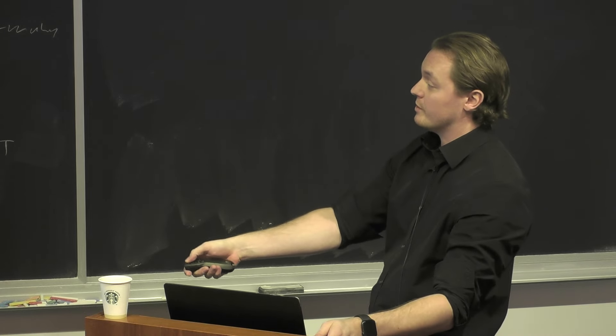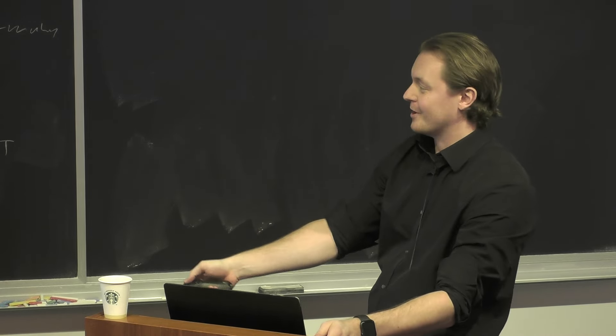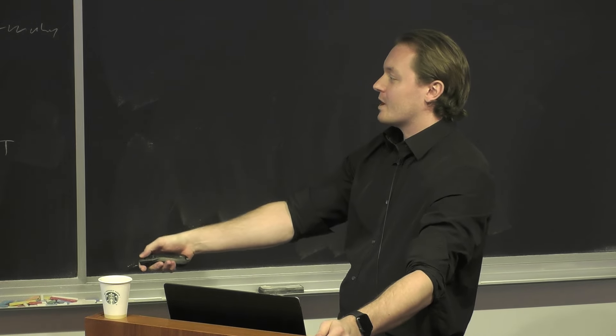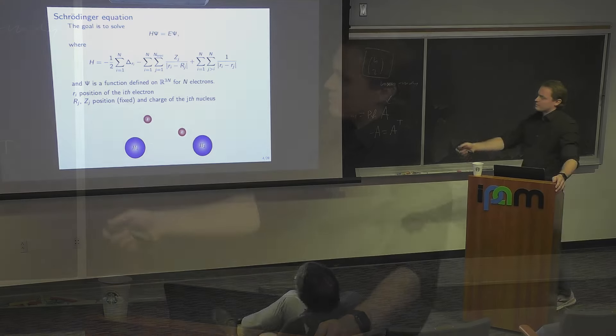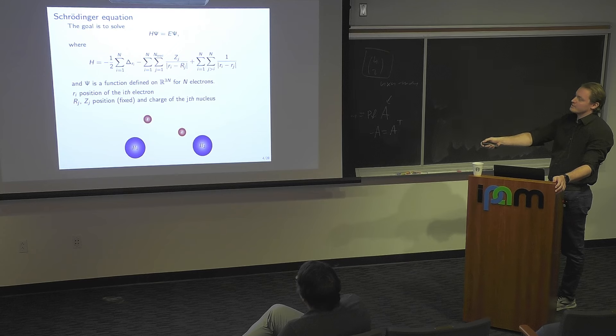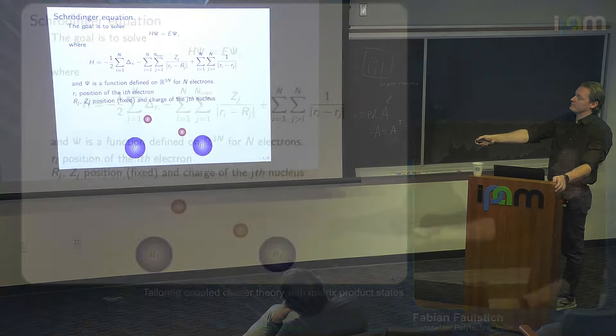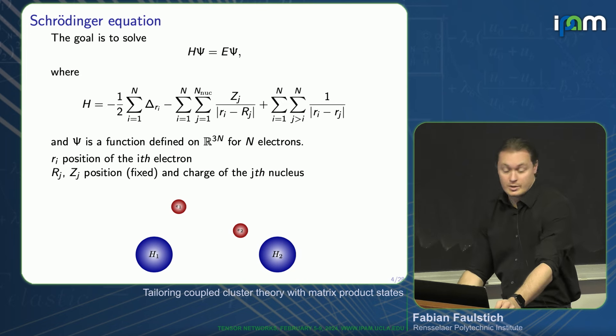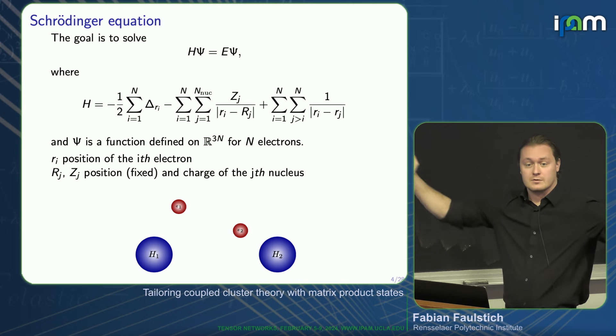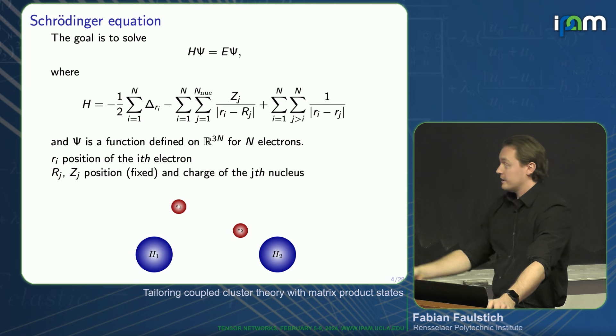Of course, we are not concerned with the hydrogen atom anymore. We know that this can be solved analytically. However, we are looking at more complicated systems, for example, H2. The Hamiltonian very naturally generalizes to the n electron case. We have a kinetic energy term, an electron-nucleus attraction term, and one additional term: the electron-electron repulsion. Equally charged particles repel each other. And computationally, it's this term that is the troublemaker.